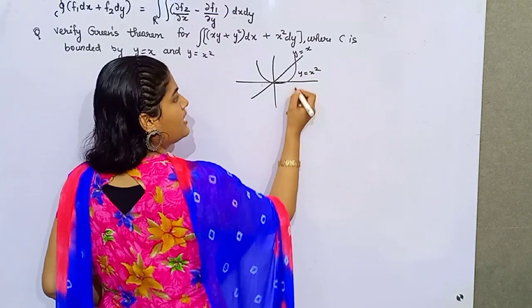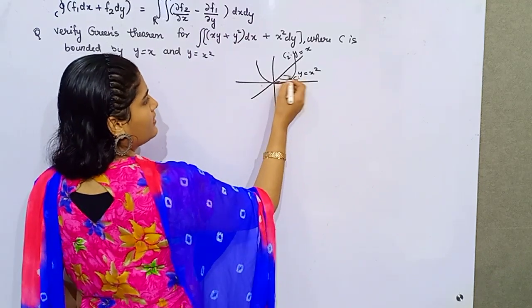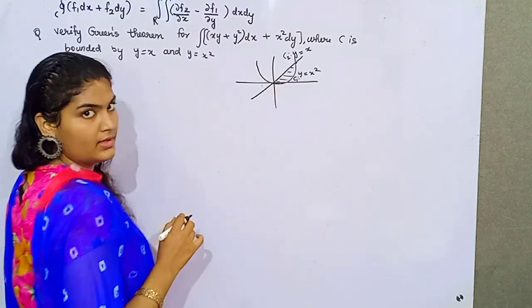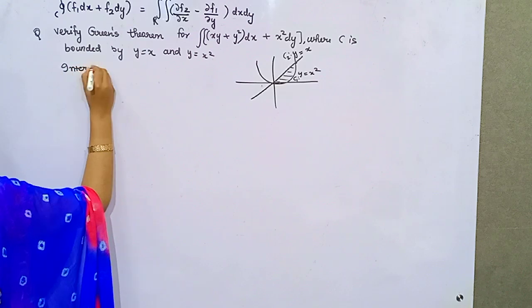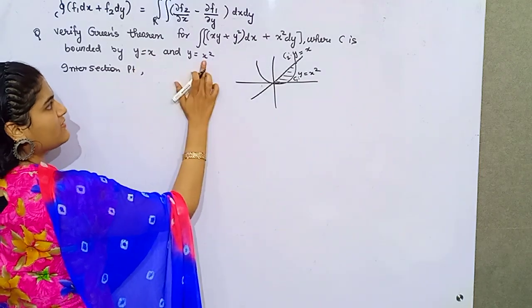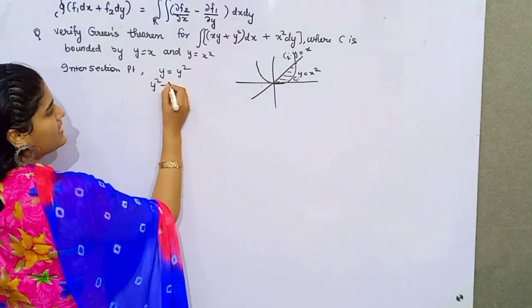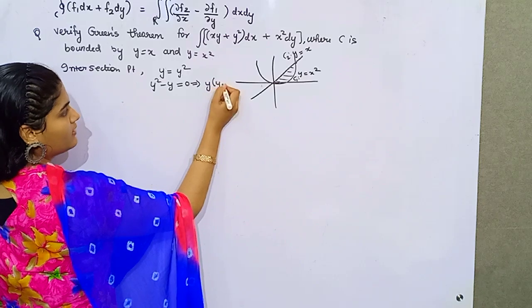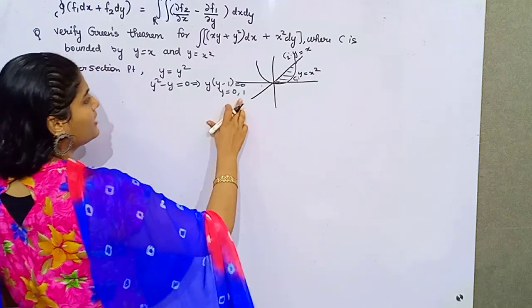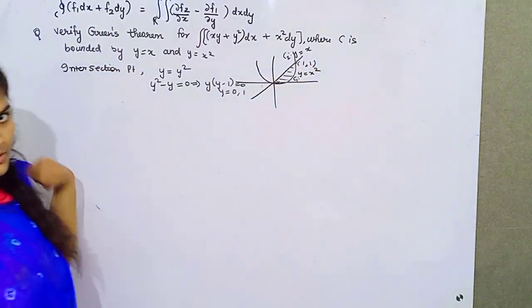Let's say this is your curve 1 and this is your curve 2. I need to find out the region here. First of all, find the intersection point. You can see it is the origin and intersection point B. So you have y equals x. If you put this value, you can put y squared as well. Take y squared minus y equals 0, y common, y minus 1. So y would be 0 or 1. If you put 0, that's the origin. If you put 1 here, then x would be 1, so 1, 1 is your intersection point.